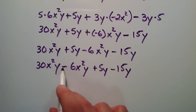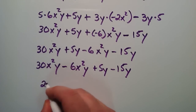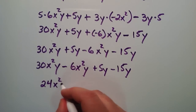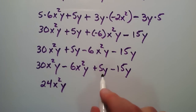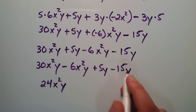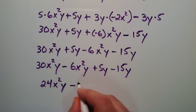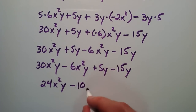30 minus 6 is 24. And then they're both x squared y, so we just write x squared y. And then we have a 5y minus a 15y. 5 minus 15 is minus 10, and then we write down the y.